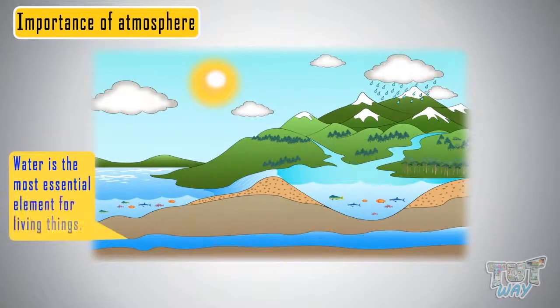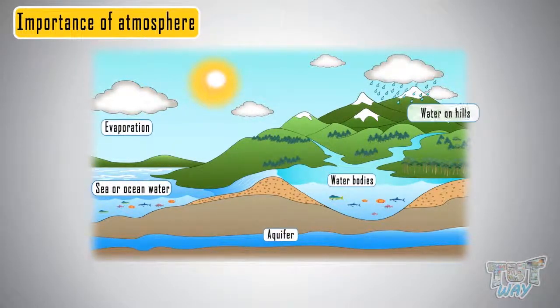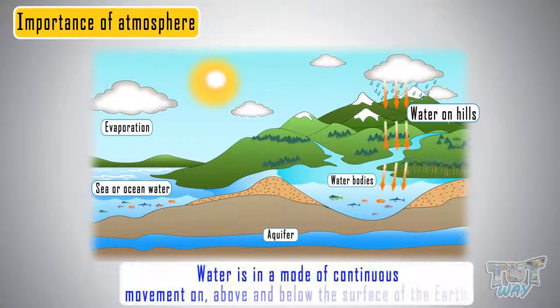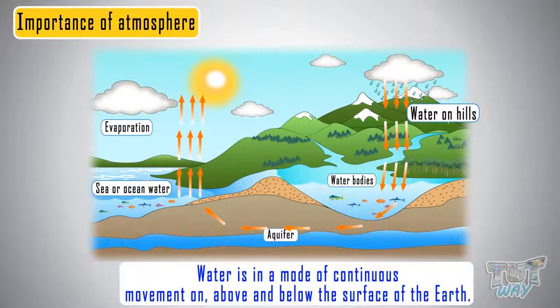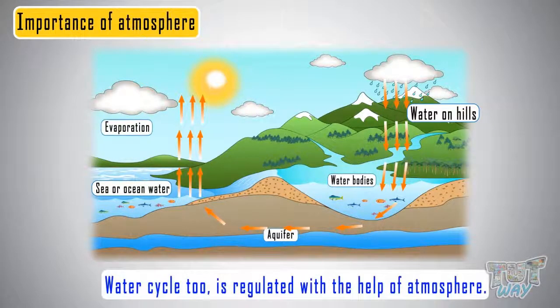Water, one of the most essential elements for living things, is present in the air, water bodies, underground and even on hilltops. And this water is in a mode of continuous movement on, above or below the surface of the Earth. And this movement of water is called water cycle. And this water cycle too is regulated with the help of our atmosphere.